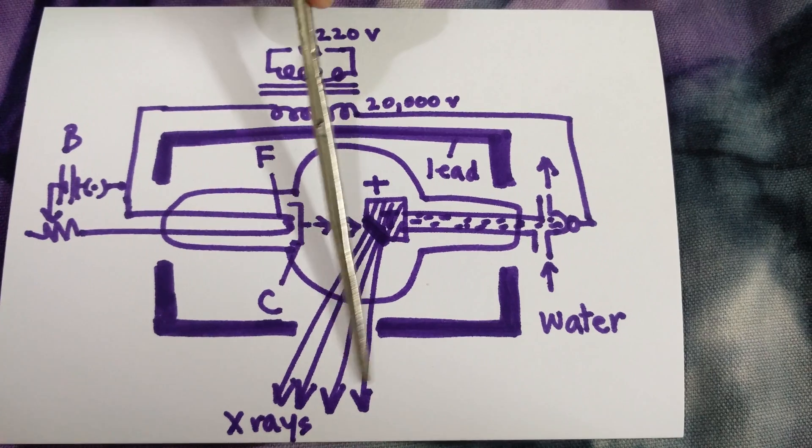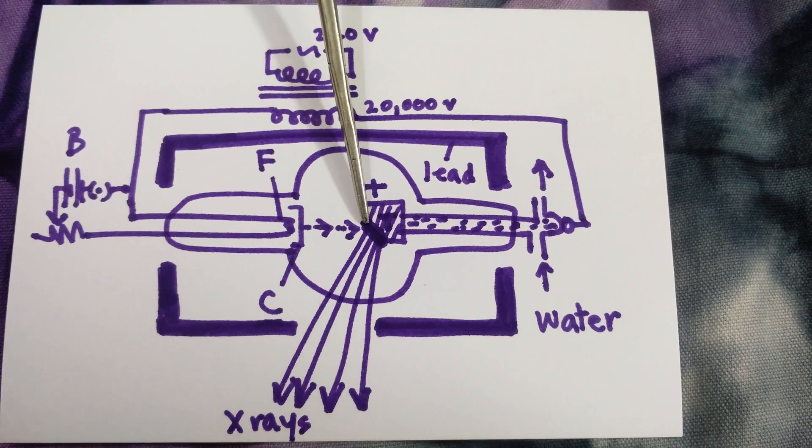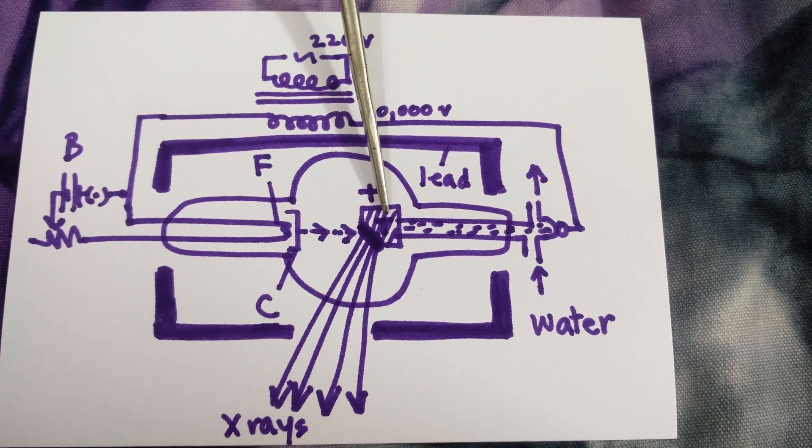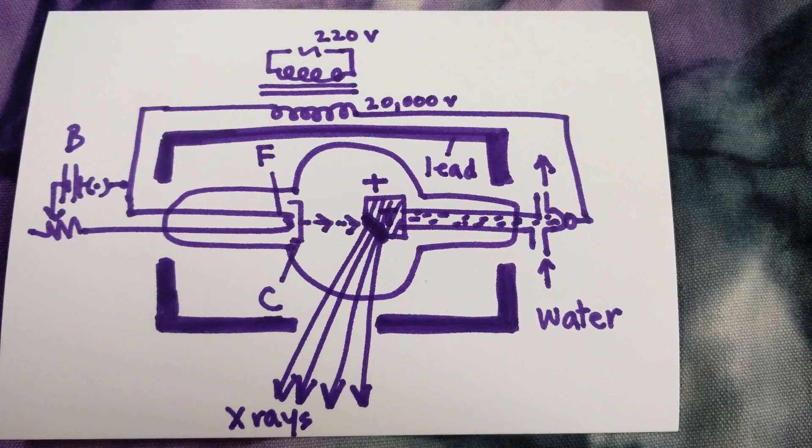At this point, x-rays are emitted from the target T and the target becomes very hot. Only 0.2% of the electron energy is utilized to produce x-rays.